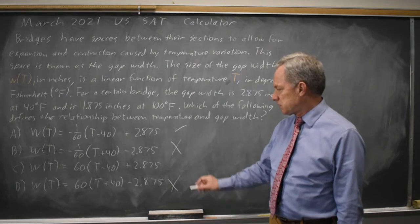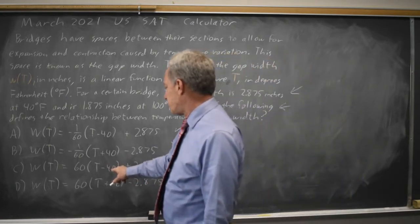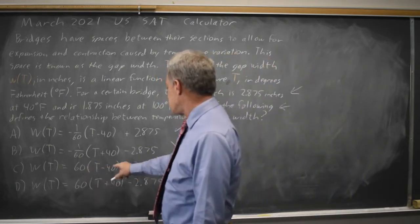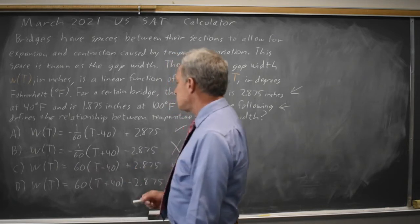The question is 40 minus 40 is 0. 0 times 60 is still 0 plus 2.875. Choice C also works.